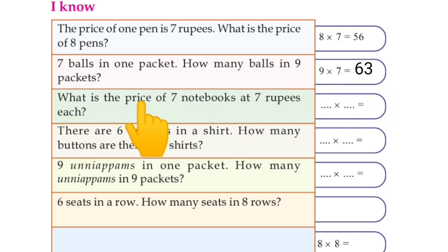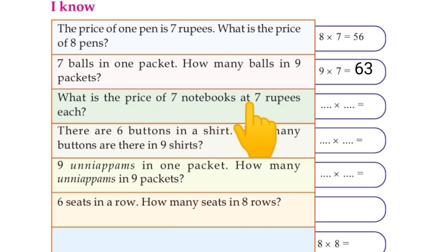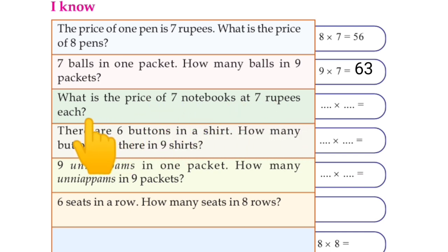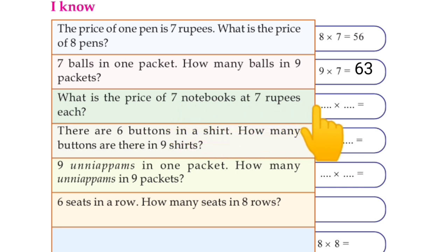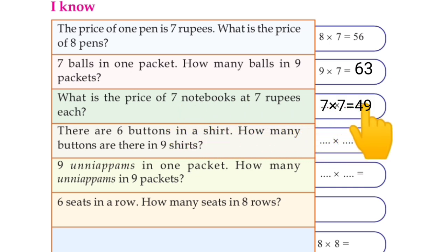What is the price of seven notebooks at seven rupees each? One notebook is seven rupees. Seven times seven is equal to 49.